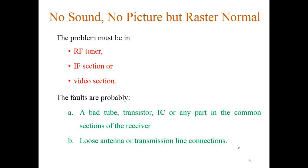The faults can be a bad picture tube, a transistor or IC, or any part of the common section of the receiver that I have shown in the previous block diagram. Or the second case may be a loose antenna or transmission line connections, so that it is not receiving the proper signals.